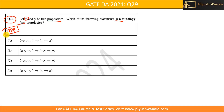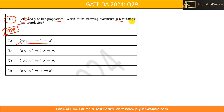Before solving this question, we should know what a tautology is. A tautology means that a particular compound statement is always true — for all possible combinations of x and y, this statement will give only a true value.